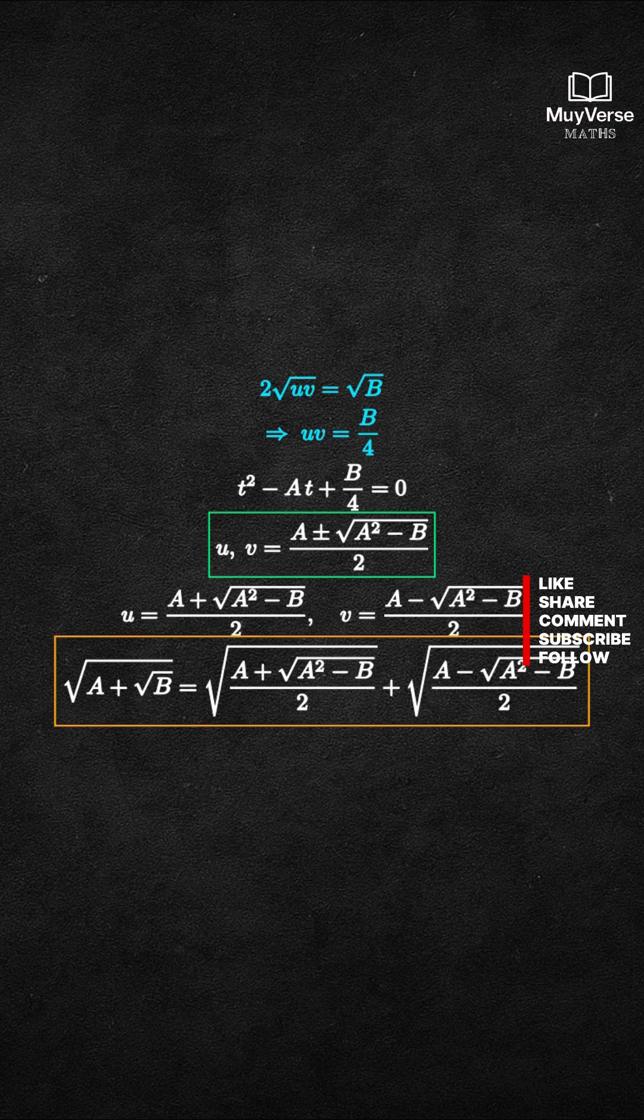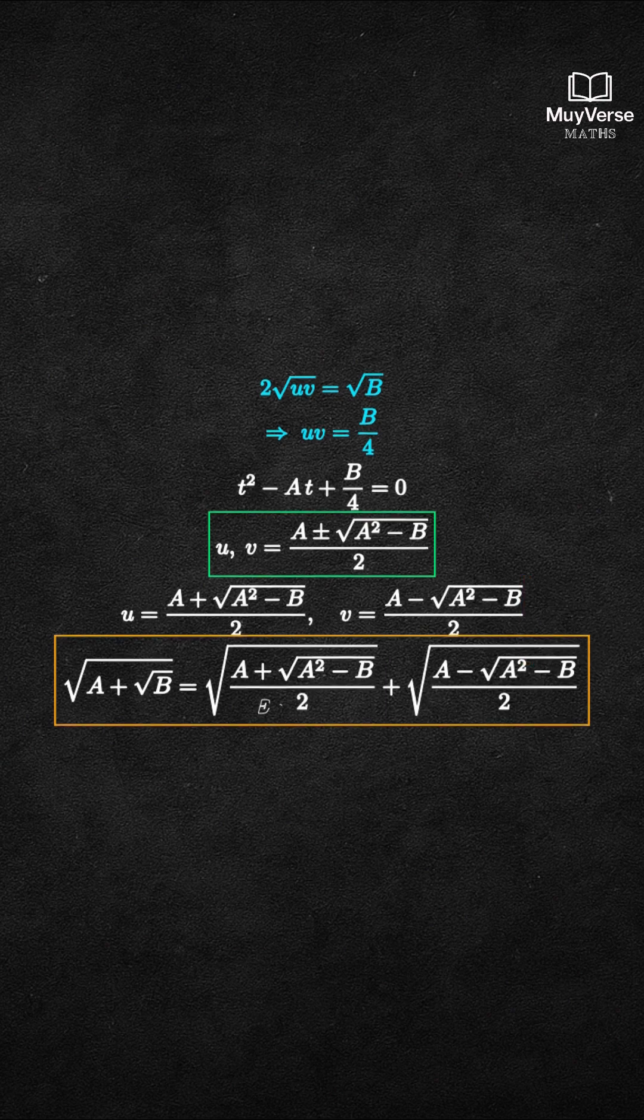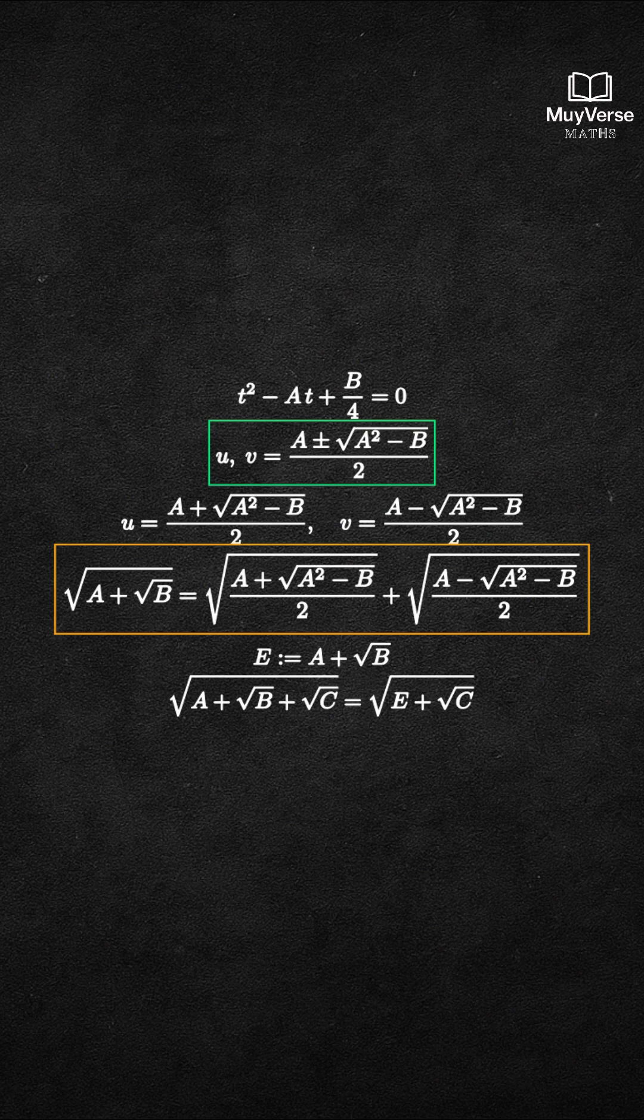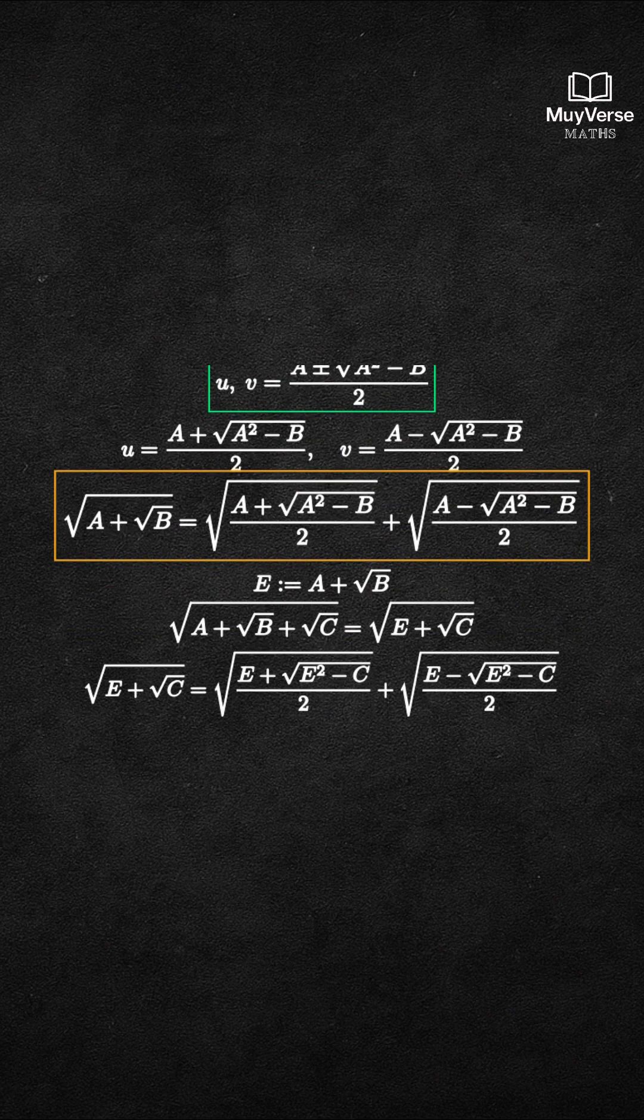Extend to three or more nested terms by peeling one radical at a time. Define e equals a plus square root of b. Then square root of a plus square root of e plus square root of c becomes square root of e plus square root of c. Apply the same two-term formula again. Each application removes one radical.